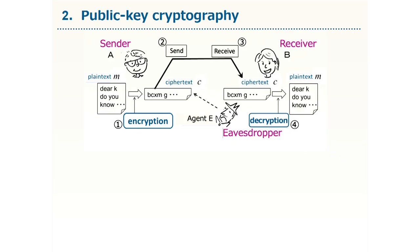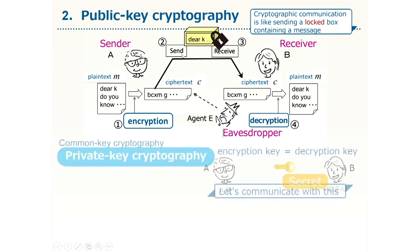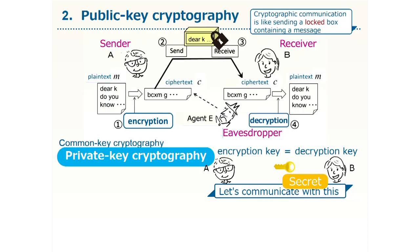Let me first talk about private key cryptography. Cryptographic communication is like placing a document you wish to send in a box, putting a lock on it, and then sending it. Those without a key are unable to open it and see what is inside. The conventional cryptography known as private key cryptography is an encryption method in which the key used to close is the same as the key used to open. Between the sender and the receiver, there is an agreement to use a common encryption and decryption key. For example, Mr. A and Ms. B decide together how to lock their encrypted communications.